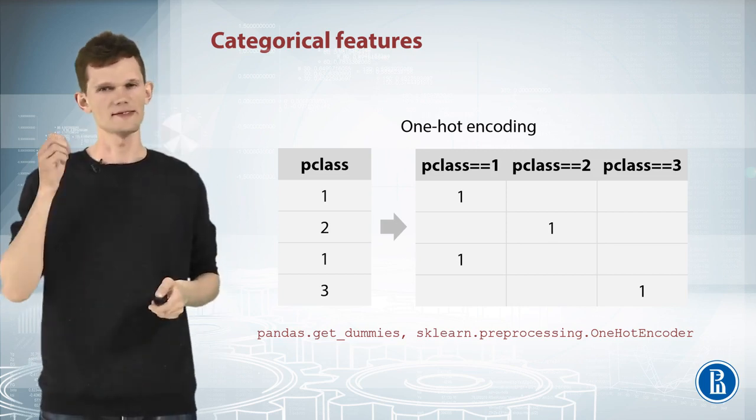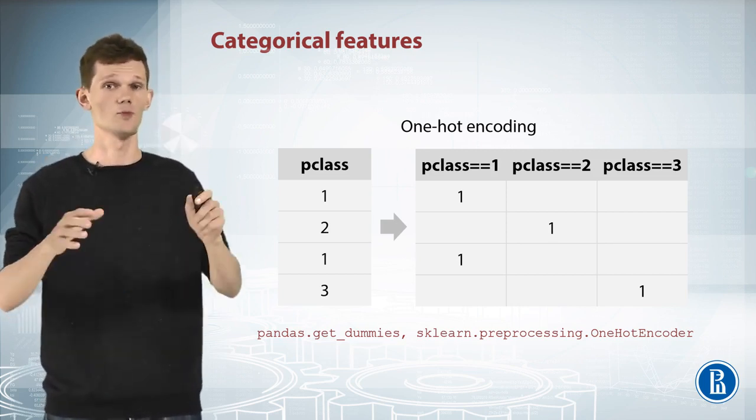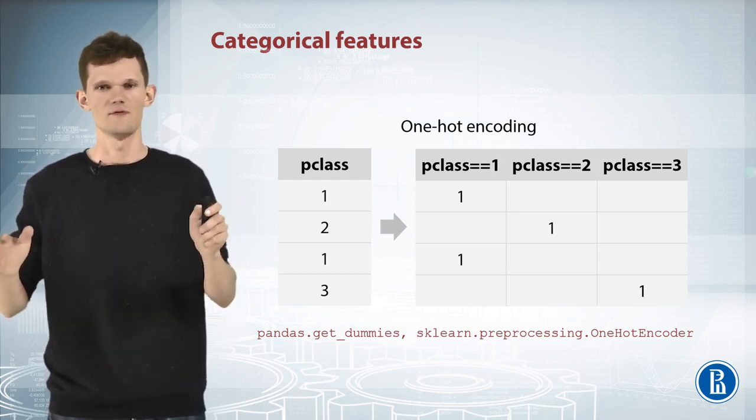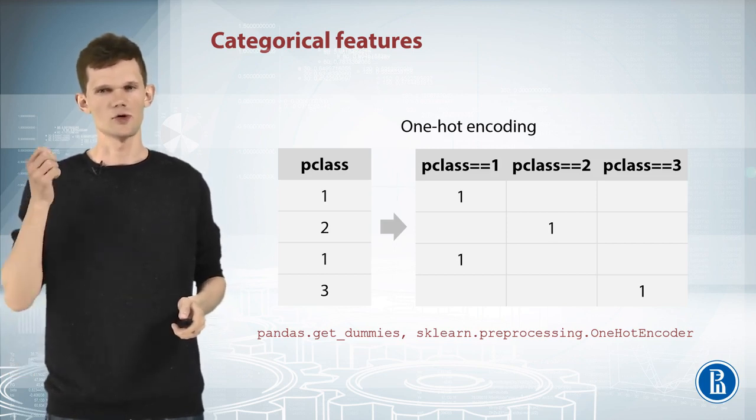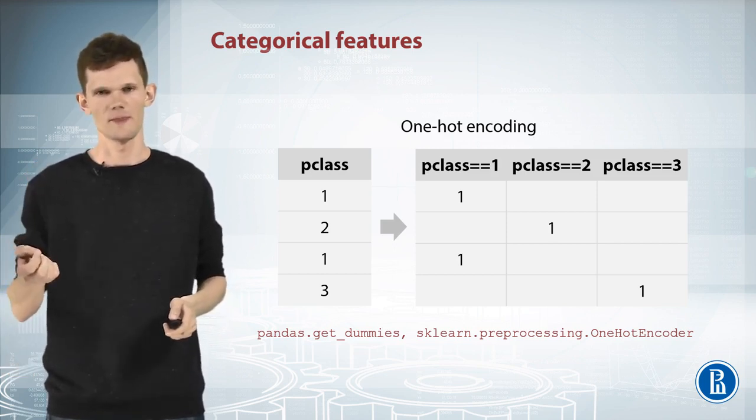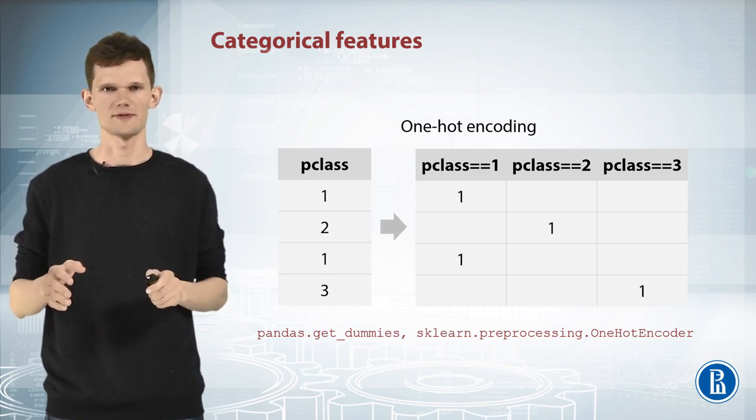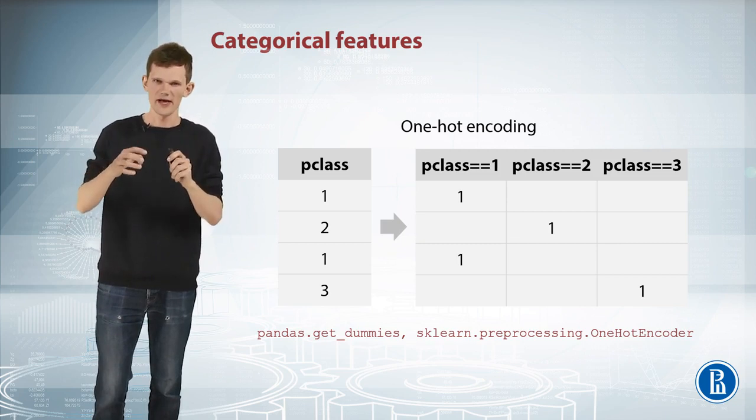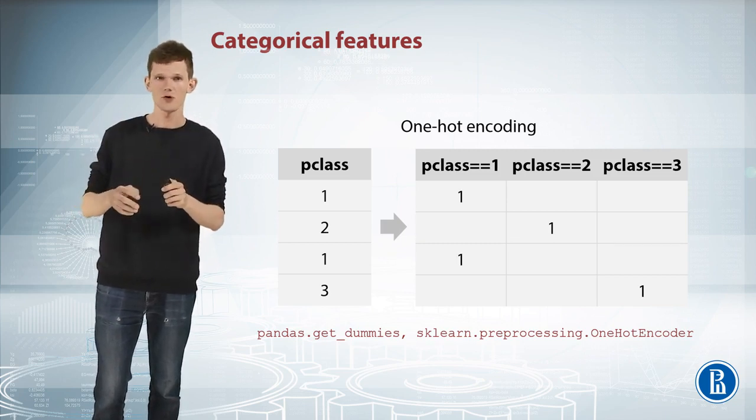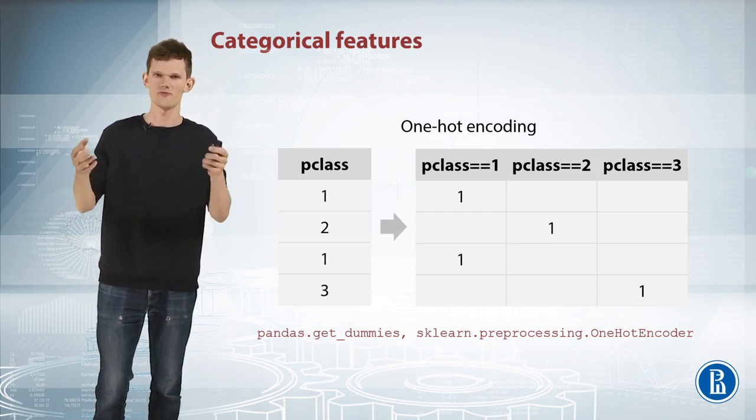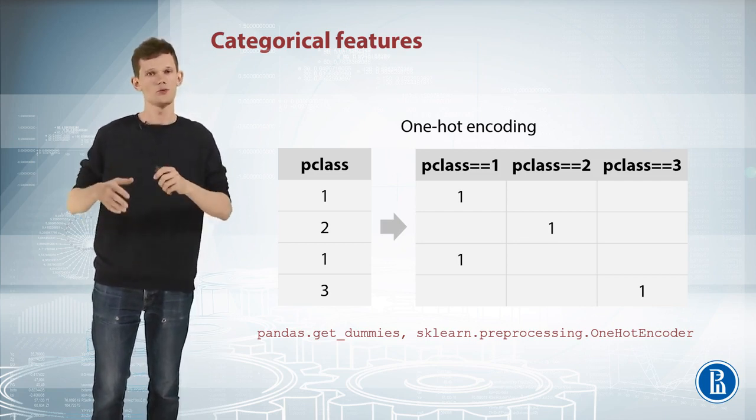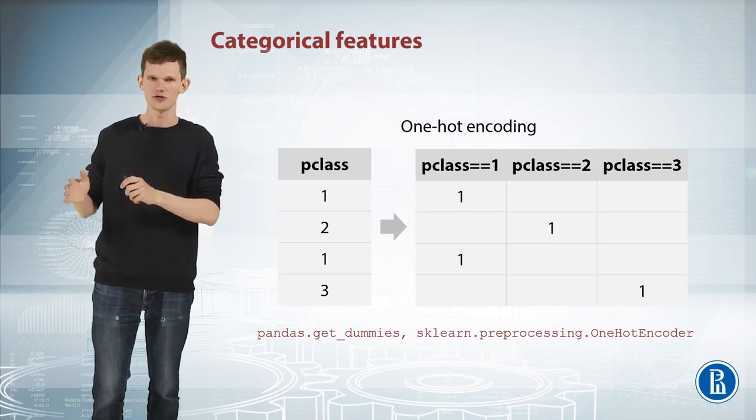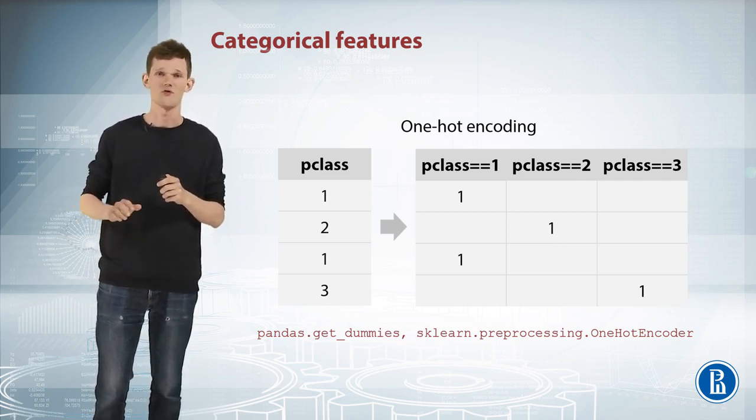Also, it's easy to imply that if categorical feature has too many unique values, we will add too many new columns with few non-zero values. To store this new array very efficiently, we must know about sparse matrices. In a nutshell, instead of allocating space in RAM for every element of an array, we can store only non-zero elements and thus save a lot of memory.